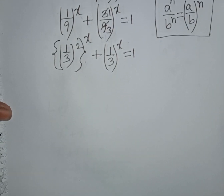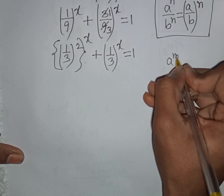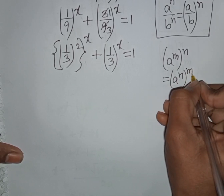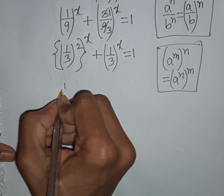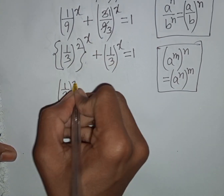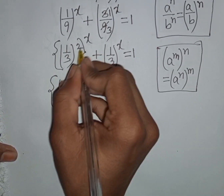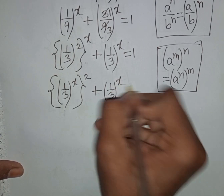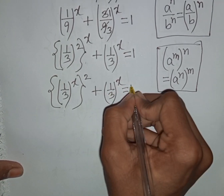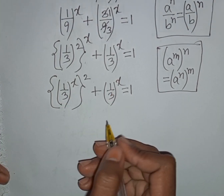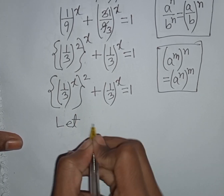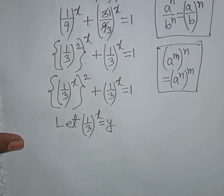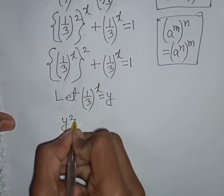We apply the exponential rule (a^m)^n = a^(mn). So (1/3)^(2x) plus (1/3)^x equals 1. We see (1/3)^x appears in both terms, so let y = (1/3)^x. Our equation becomes y² + y.